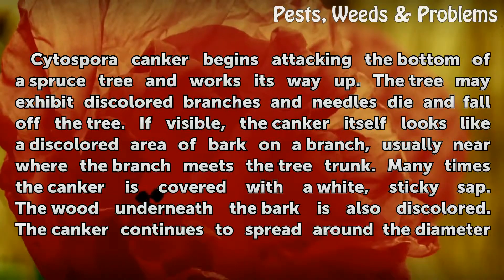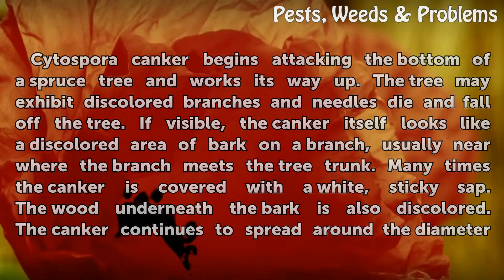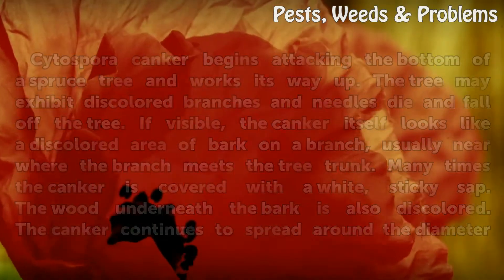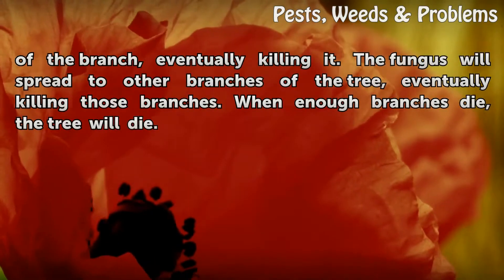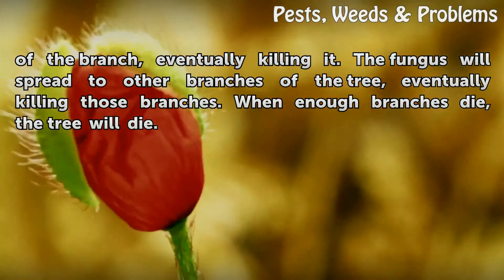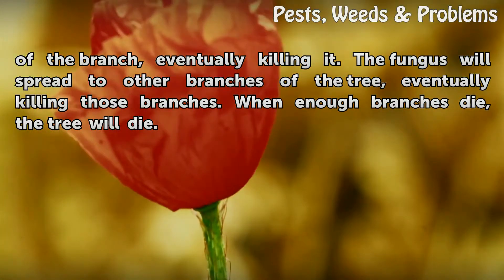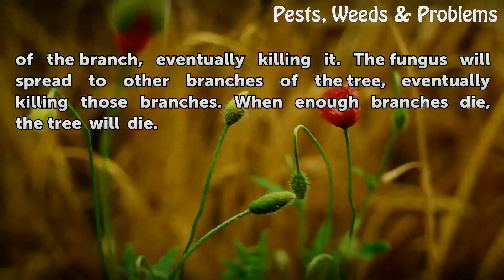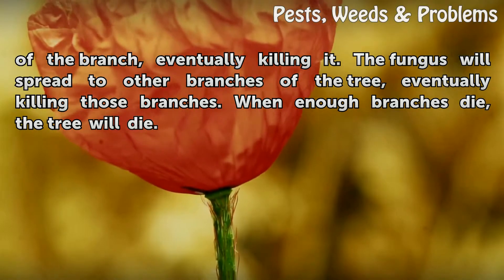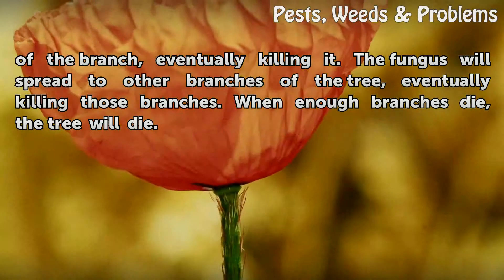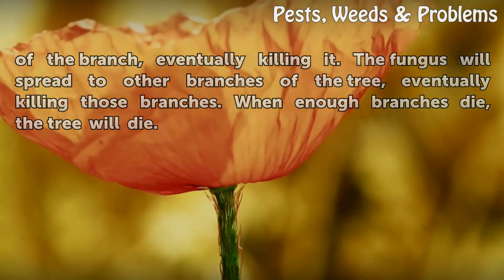The wood underneath the bark is also discolored. The canker continues to spread around the diameter of the branch, eventually killing it. The fungus will spread to other branches of the tree, eventually killing those branches. When enough branches die, the tree will die.